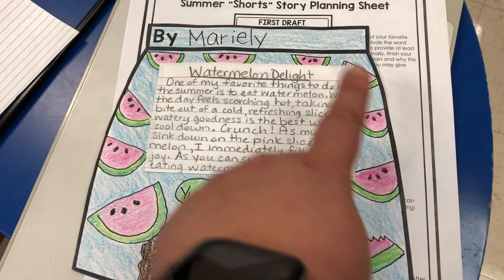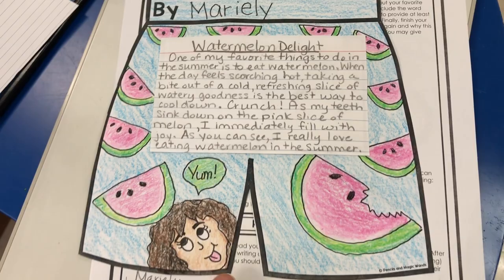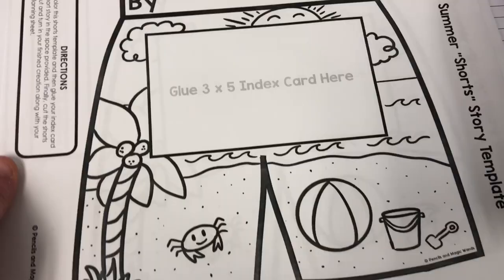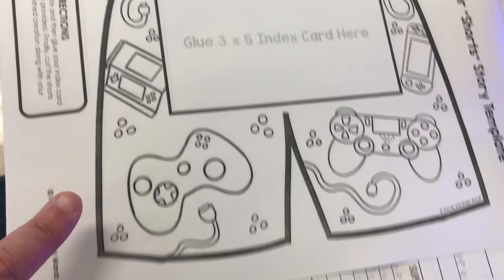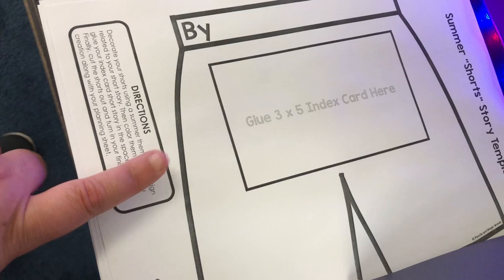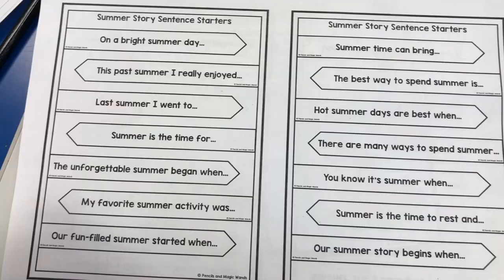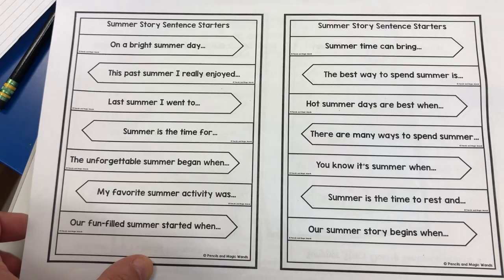They will copy their story onto an index card and then they could choose either a blank short template or one with doodles. I chose a blank one and just decided to do my own doodles of watermelon. Here's my story, my final draft — I wrote my name, all my doodles, colored it with crayon, and glued the index card on the space provided. Here are examples of the other short templates available: a beach one, one with kites, one with video games, and one with movies. I also gave students some examples of story sentence starters so they know how to start their story.